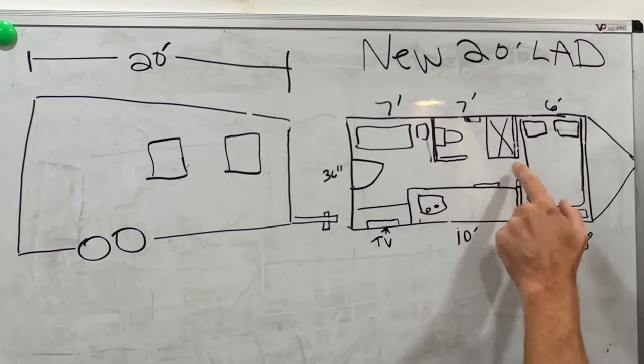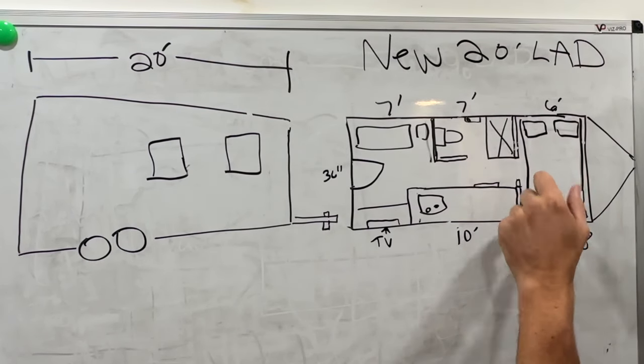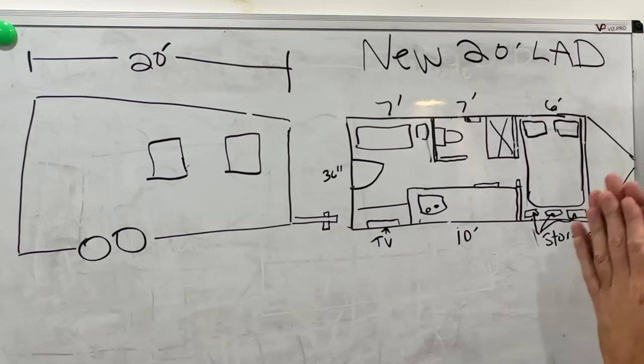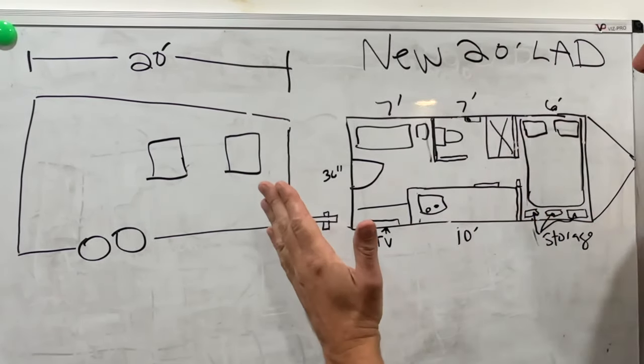Moving beyond that would be a pocket door. Essentially you can either put a queen or a full-size bed here and then have a pocket door so you can close that off for privacy. Basically in 20 feet with a downstairs sleeping area, you have a fully functional home.